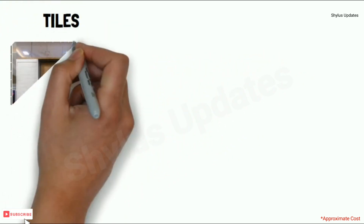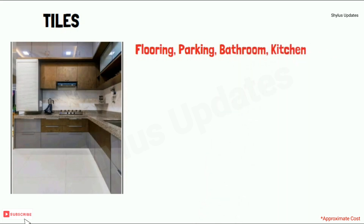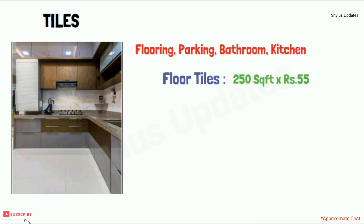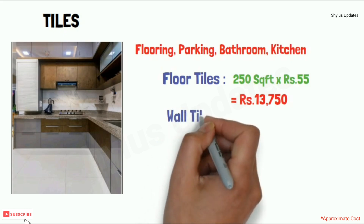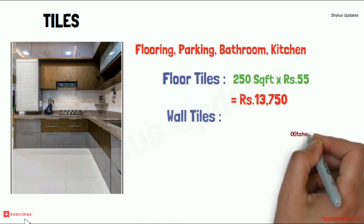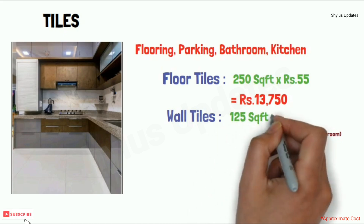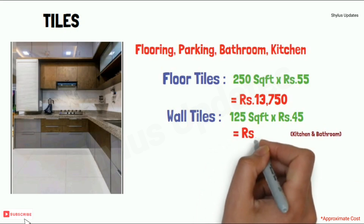Tiles are used in flooring, parking areas, bathroom, and kitchen areas. Floor tiles are required for 250 square feet at rupees 55 per square feet, giving rupees 13,750. Wall tiles are used in kitchen and bathrooms — required for 125 square feet at rupees 45 per square feet, giving rupees 5,625.